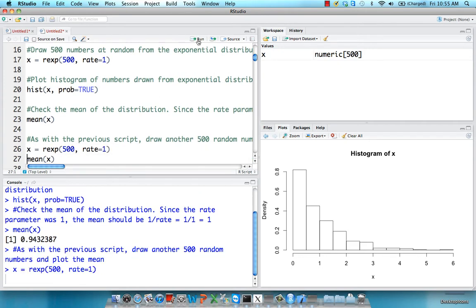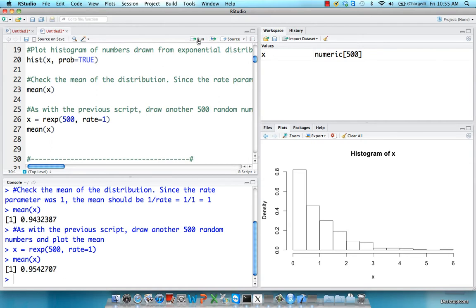And if we do this again with 500 random numbers, we get another mean that's pretty similar to the population mean.